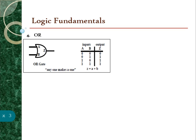Now we look into the OR gate. The OR gate may have any number of inputs and one output. For the output of an OR gate to be logic one, at least one input must be at logic one. If all inputs are logic zero, the output will be logic zero. The expression or formula for the OR gate uses a plus symbol.